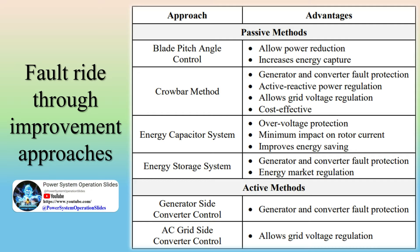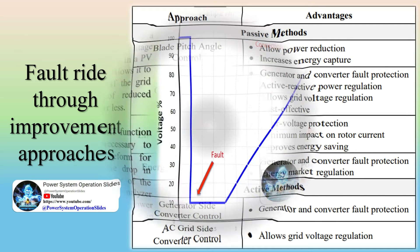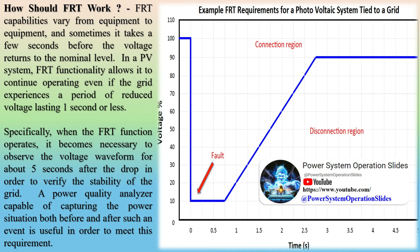A line-to-ground (LG) fault is caused by a conductor making contact with a grounded structure and it is the most common — 70% of all faults are LG faults. The LG fault causes IB = 0, IC = 0, and VA = 0.